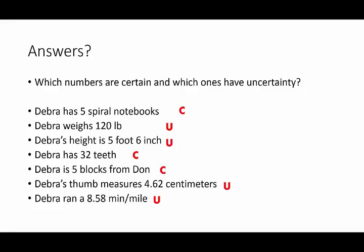The answers are as below. Now, you'll notice what makes them certain is that you actually counted them. But what makes them uncertain is you measure them. And all measurements have a degree of uncertainty about them just by their virtue of being measured, and how accurately or how precise we measure them.